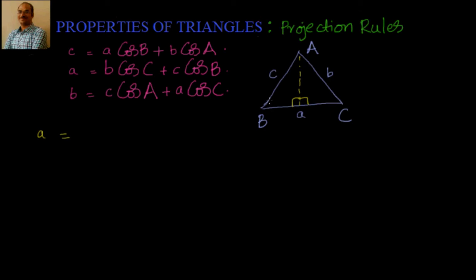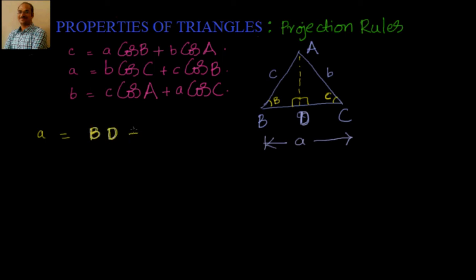Now, this angle is equal to B and this angle is equal to C. Let us say A is equal to this part X and this part Y. Let me put it in another color. Let us call this length D. This whole length is nothing but equal to a. So a is nothing but equal to BD plus DC, because a is the full base.